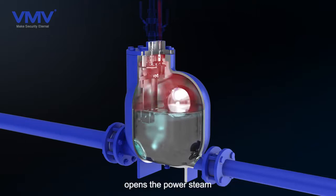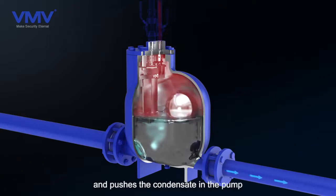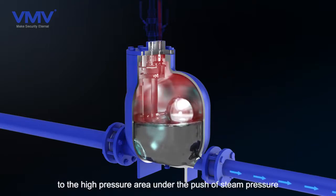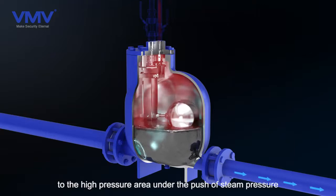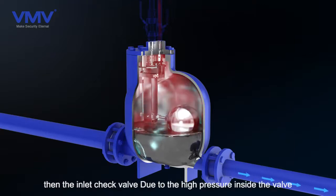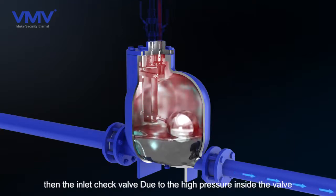The controller closes the exhaust valve and opens the power steam. Steam injects into the valve and pushes the condensate in the pump to the high pressure area under the push of steam pressure.